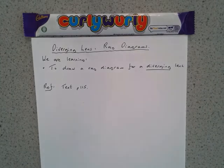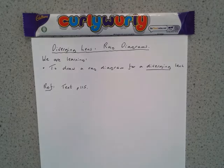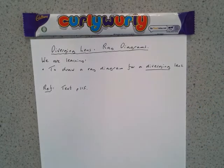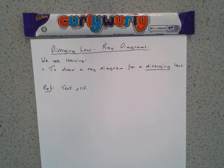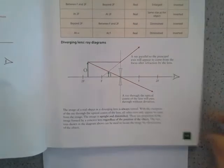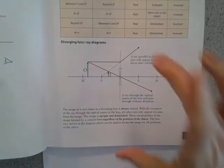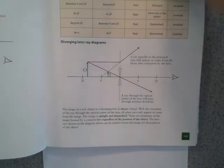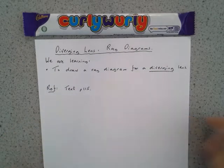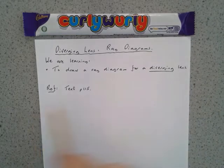In the previous lessons we've drawn the various ray diagrams for the converging lens. The diverging lens we can do in a very similar way. Now the reference for this is the textbook, it's page 115. So if you look up your textbook page 115, there's the diagram that we're trying to produce.